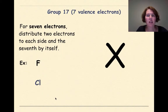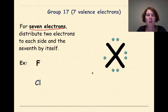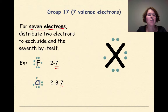Group 17 has 7 valence electrons. Distribute 2 electrons to each of three sides, with the 7th electron by itself — giving 3 filled sides and 1 electron alone. Fluorine has an electron configuration of 2, 7 — 7 valence electrons. Chlorine has an electron configuration of 2, 8, 7 — also 7 valence electrons in the end. Everything in group 17 will have 7 valence electrons, and the electrons are filled in this pattern.